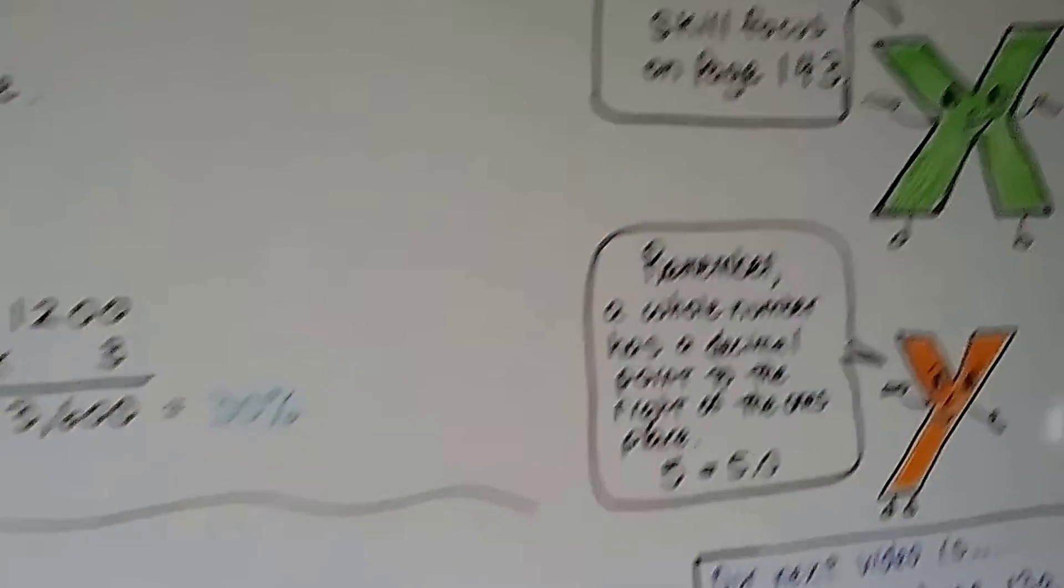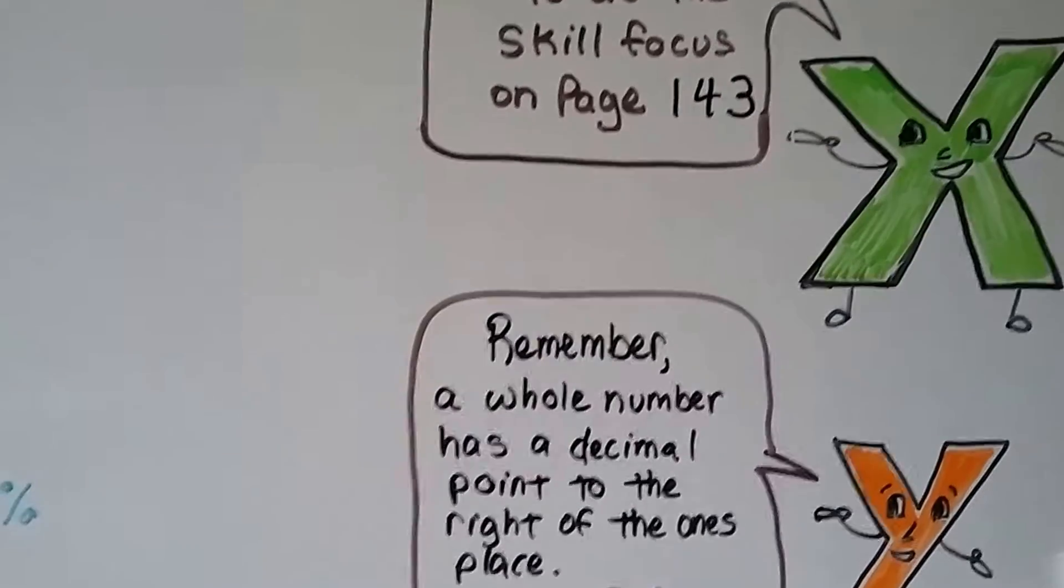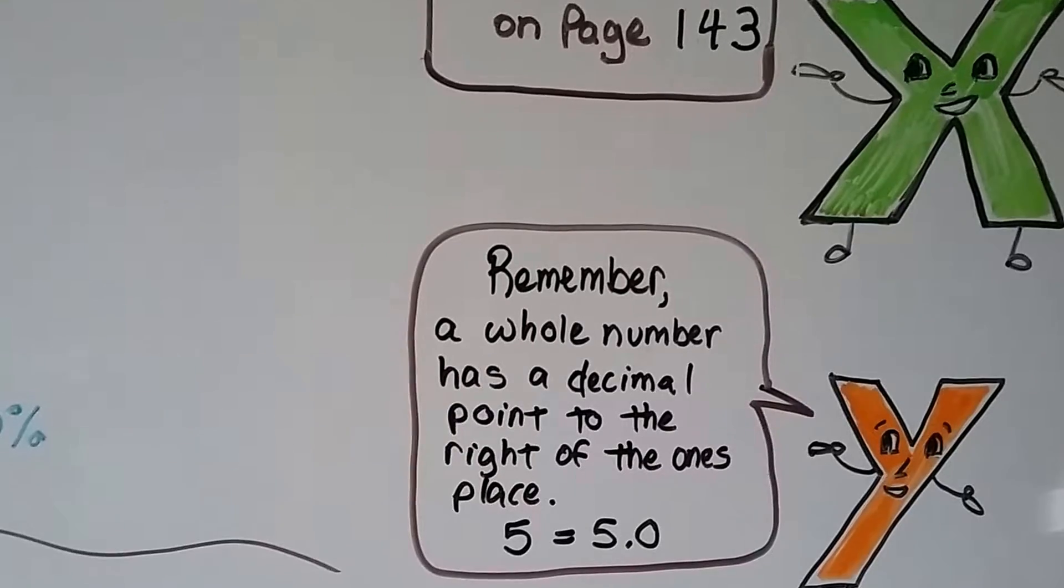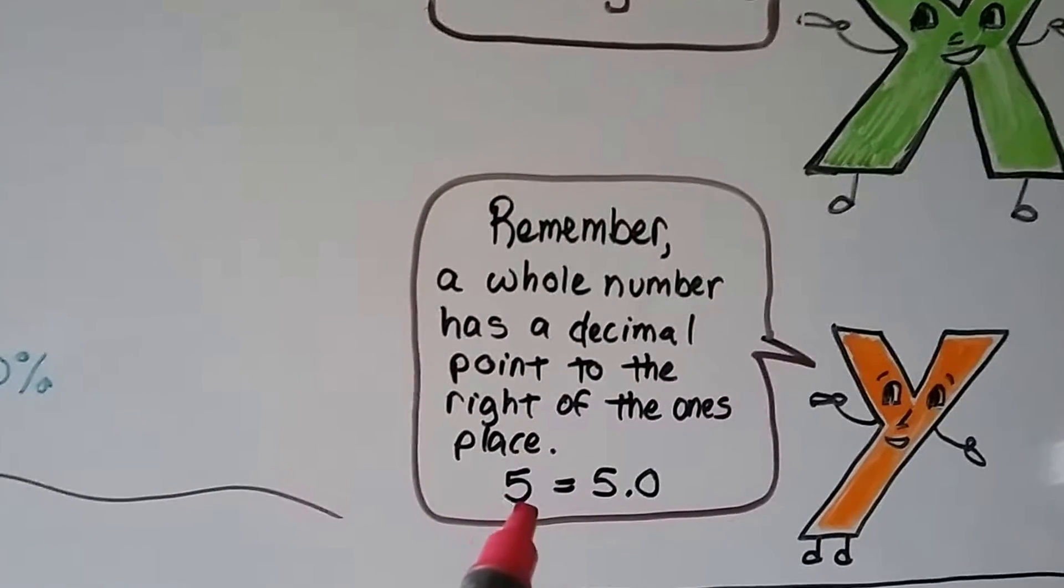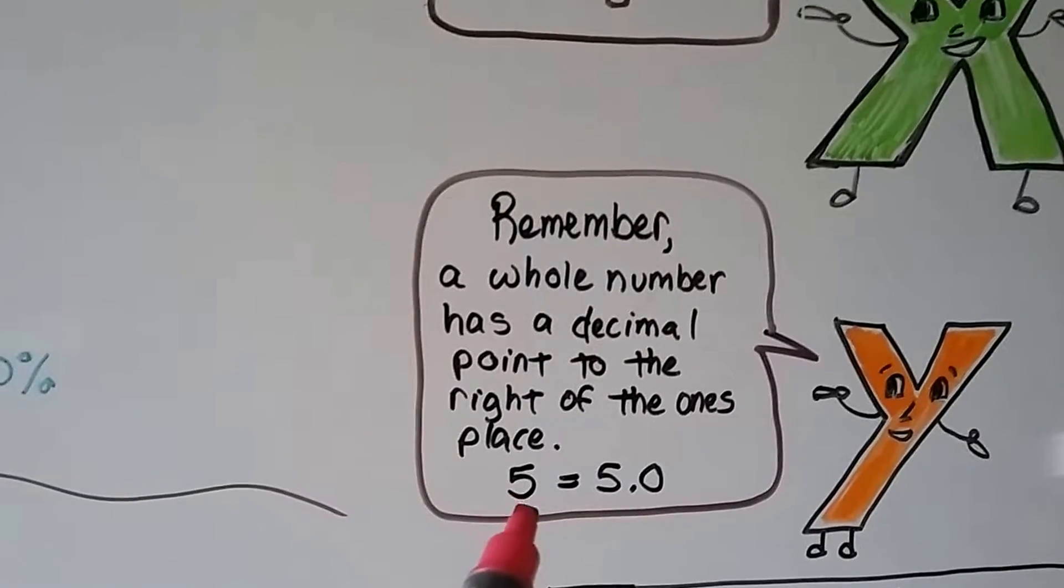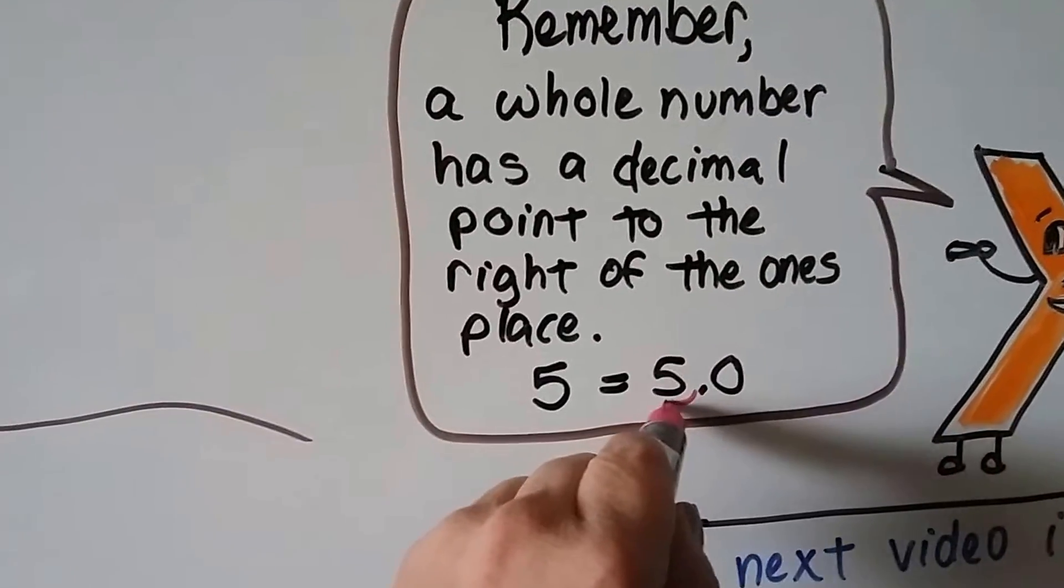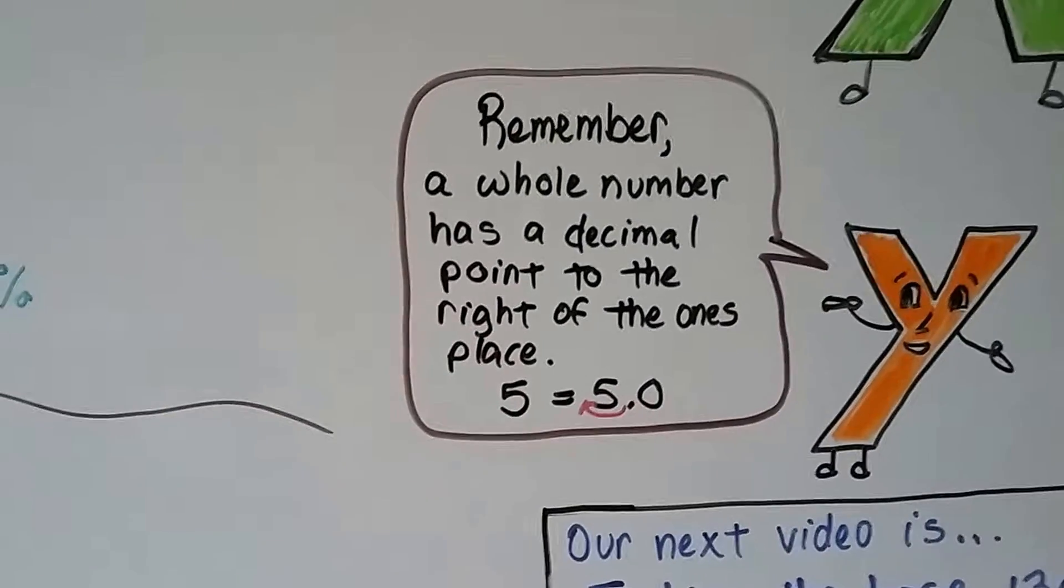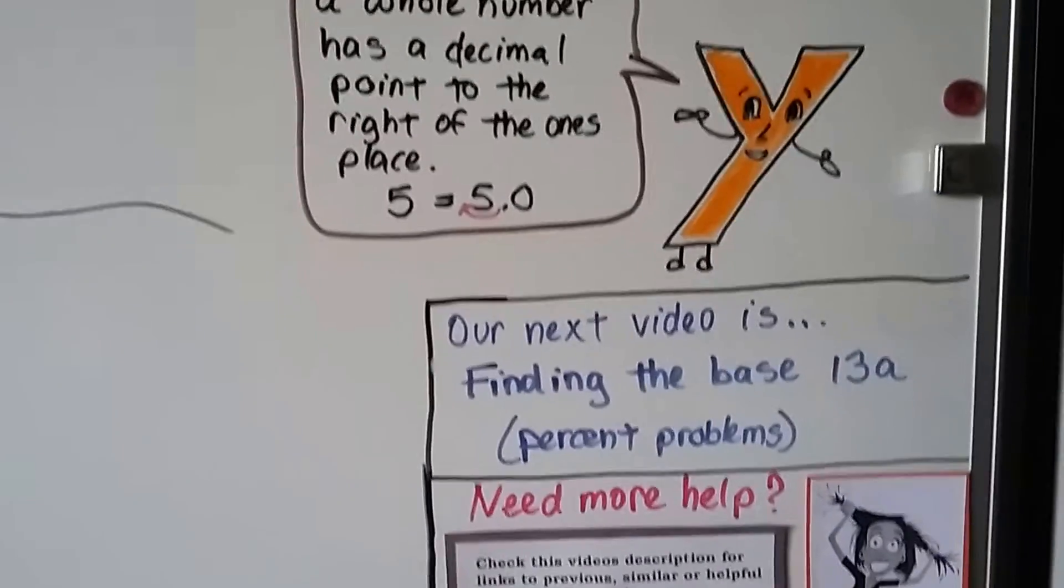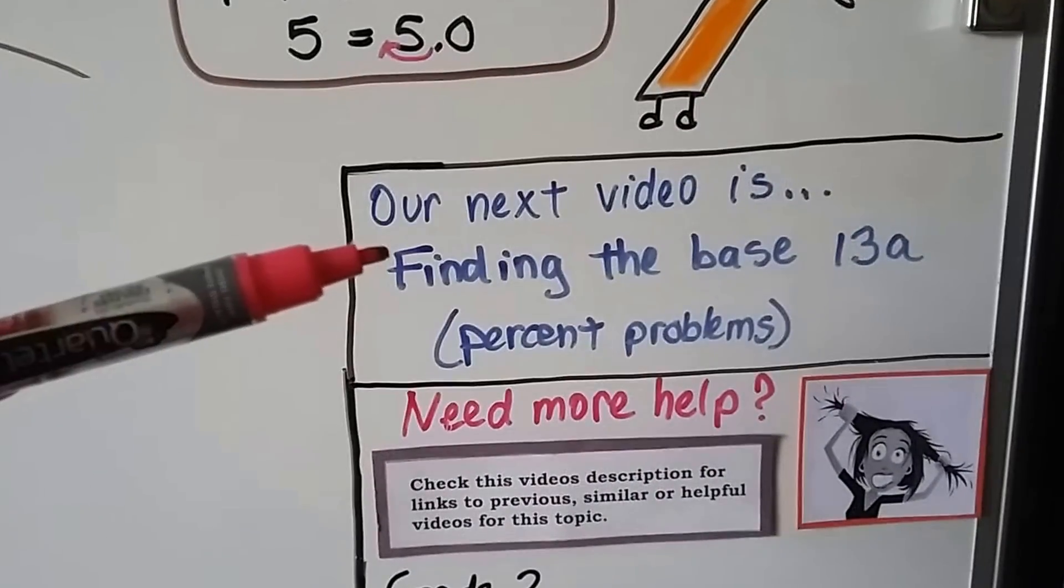So now you should be ready to do that skill focus on page 143. And remember, a whole number has a decimal point to the right of the ones place. So if it's just a five, we can still do ten percent of it by moving a decimal this way to in front of it. So ten percent of five would be 0.5. Our next video is going to be lesson thirteen. We're going to be finding the base, and that's for percent problems.